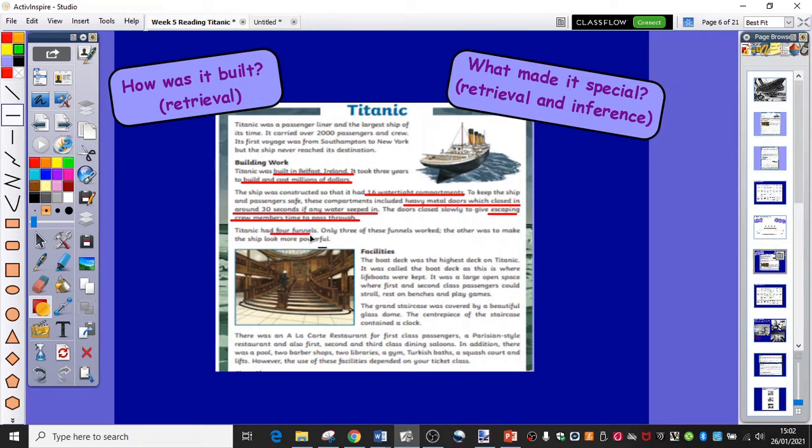It had four funnels, but interestingly, only three of these funnels worked. The other one was just to make it look powerful. So that tells us a lot about the people who made the ship, doesn't it? That they obviously wanted this landmark ship, this amazing vessel to look really powerful because it was the biggest ship that had been made. So they wanted it to look as best as it possibly could.